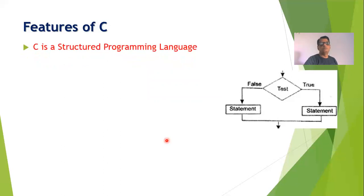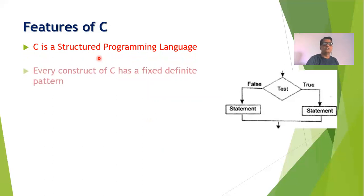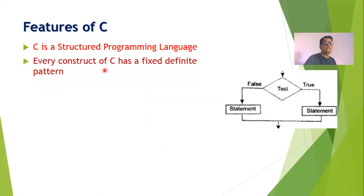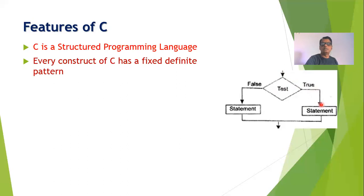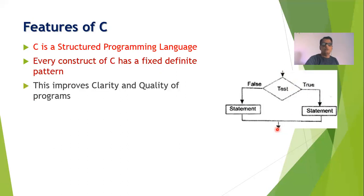Now let us understand some features of C programming language. C programming language is a structured programming language, meaning it has a definite structure. Every construct has a fixed definite pattern. For example, we have control structures in C such as if-then. Initially we test a condition as shown in the diagram, and if the condition is true, one part of the statement is executed. In both cases, control of execution goes to the next part of the program. When every construct has a definite structure, it improves the clarity and quality of the programs.